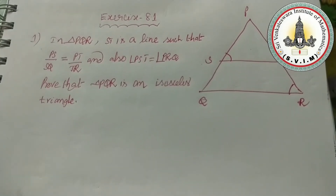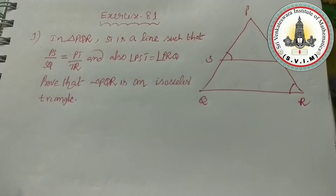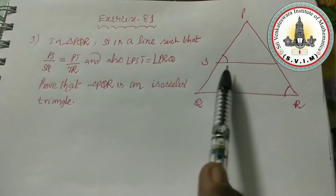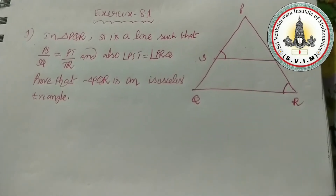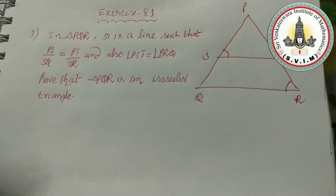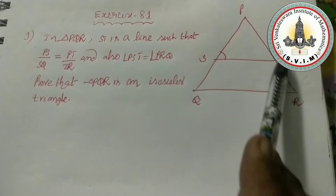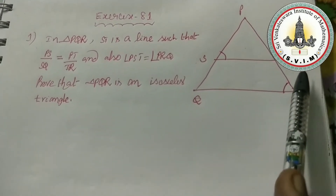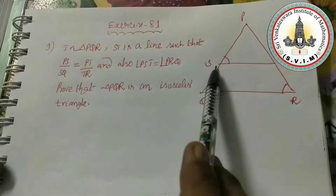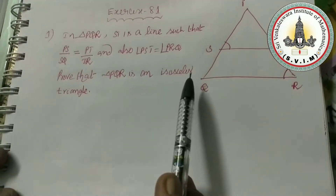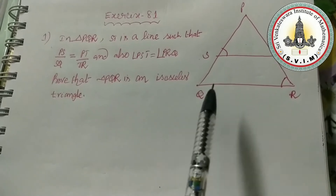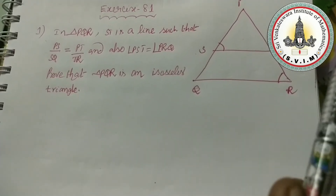Let me explain the problems in Exercise 8.1. The first problem: in triangle PQR, ST is a line segment. In that triangle, PS by SQ is equal to PT by TR — that is how the line segment ST is positioned. Also given: angle PST is equal to angle PRQ. Using these, we need to prove that triangle PQR is an isosceles triangle.